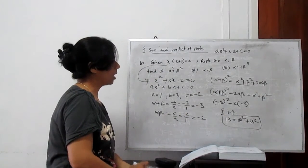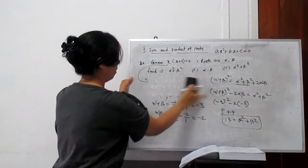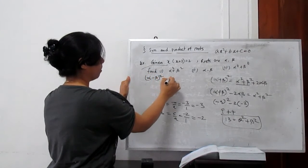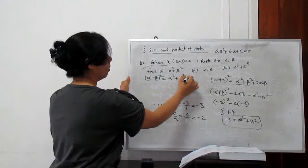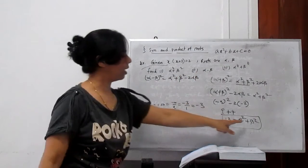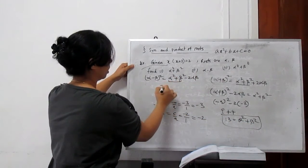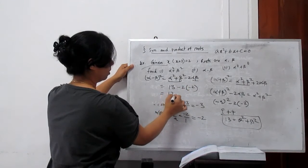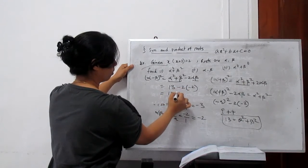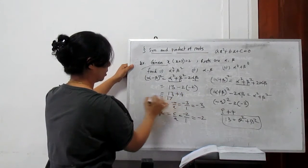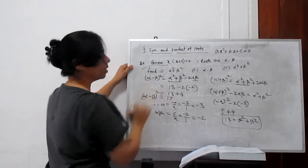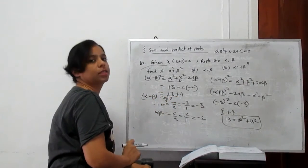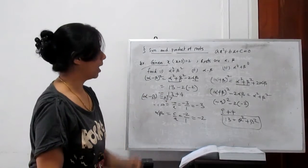Now the second part asks us to find alpha - beta. We use (alpha - beta)² = alpha² + beta² - 2·alpha·beta. We have alpha² + beta² = 13 and alpha·beta = -2. So (alpha - beta)² = 13 - 2(-2) = 13 + 4 = 17. Therefore alpha - beta = ±√17.